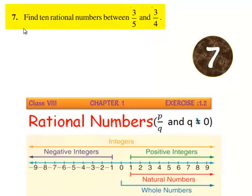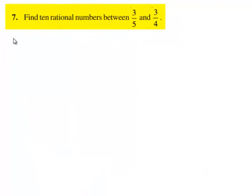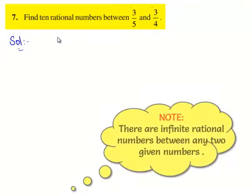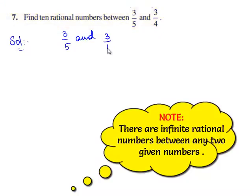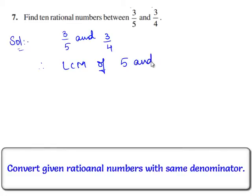Now, let us move on to the seventh question. The question is: find 10 rational numbers between 3 by 5 and 3 by 4. Let us move on to the solution. The given two rational numbers are 3 by 5 and 3 by 4. Let us express these rational numbers with a common denominator. Therefore, we find LCM of 5 and 4. Since 5 and 4 do not have any factor in common, the LCM of 5 and 4 is their product, that is 5 times 4, which is equal to 20.